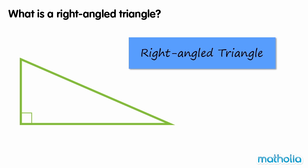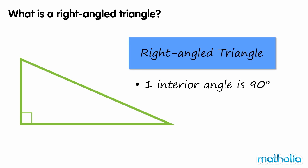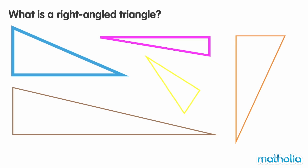What is a right angled triangle? A right angled triangle has one interior angle that is 90 degrees. All of these triangles are right angled triangles.